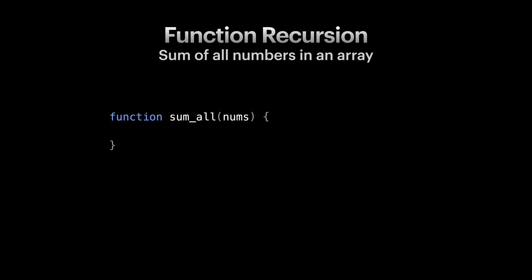In imperative approach, we would come up with something like this. We define a variable for keeping our result, initialize it with value 0, then iterate over the array items one by one and update the result by adding each number to it.